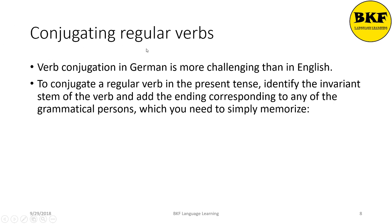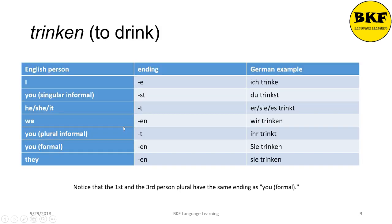Conjugating regular verbs. Verb conjugation in German is more challenging than in English. To conjugate a regular verb in the present tense, identify the invariant stem of the verb and add the ending corresponding to the grammatical person, which you need to simply memorize. Let's take a verb, trinken, which means 'to drink.' So: 'I drink' is ich trinke, 'you drink' is du trinkst, 'he drinks' is er trinkt, 'we drink' is wir trinken, 'you drink' plural is ihr trinkt, 'you drink' formal is Sie trinken, and 'they drink' is sie trinken.